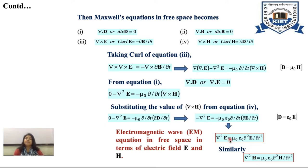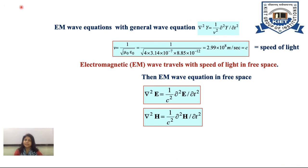Recalling the EM wave equations in free space: del squared E equals mu naught epsilon naught del squared E over del t squared, and del squared H equals mu naught epsilon naught del squared H over del t squared. Comparing with the general wave equation del squared Y equals (1/v squared) del squared Y over del t squared, the velocity v equals 1 over the square root of mu naught epsilon naught, which evaluates to 2.99 times 10 to the power 8 meters per second.